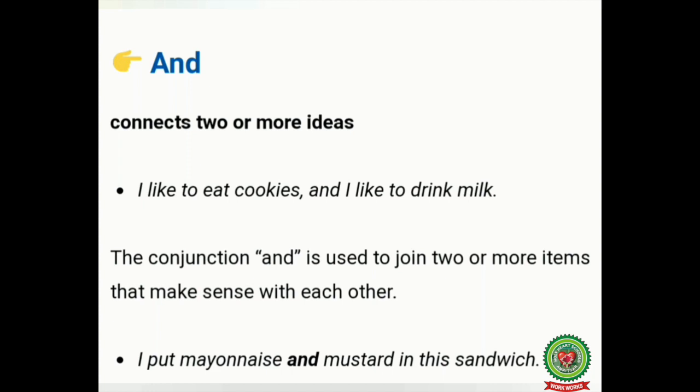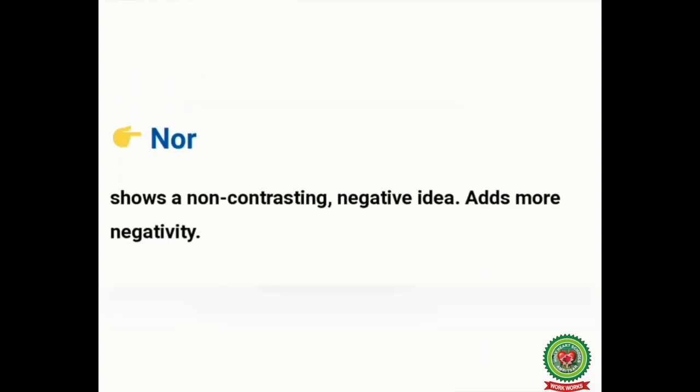The next coordinating conjunction is 'and.' 'And' is used to show addition. For example: 'I like to eat cookies and I like to drink milk.' Here 'and' connects two ideas — eating cookies and drinking milk. In another example, 'and' is used to join two words: mayonnaise and mustard.